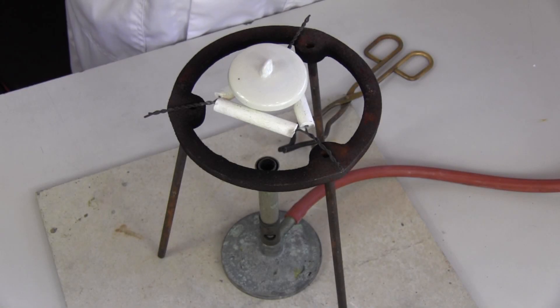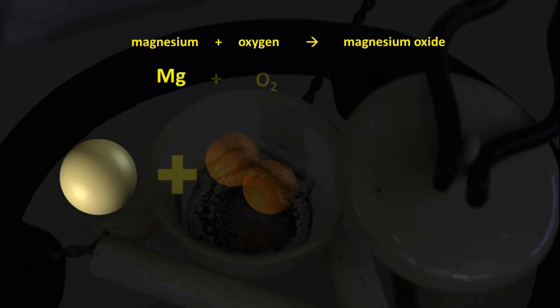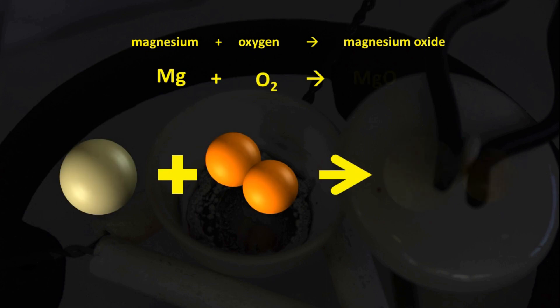The chemical equation for the reaction is magnesium plus oxygen produces magnesium oxide. Mg plus O2 produces MgO.